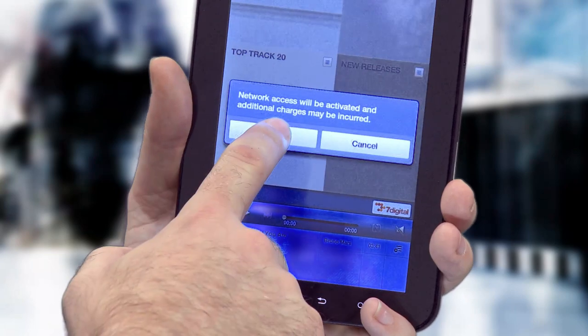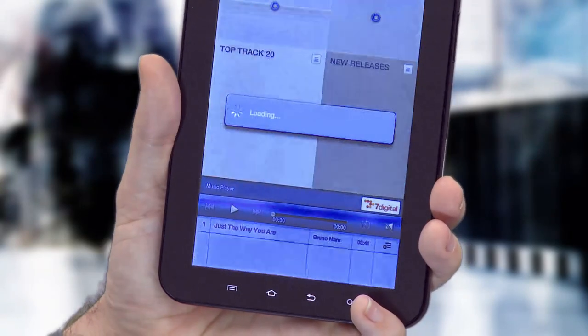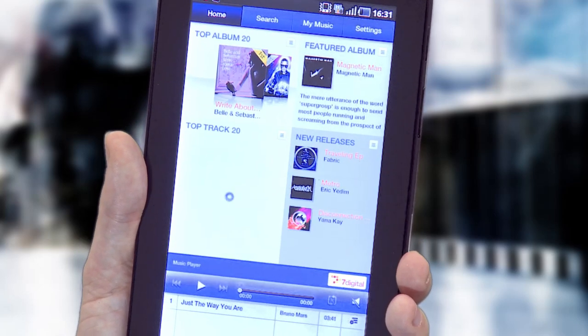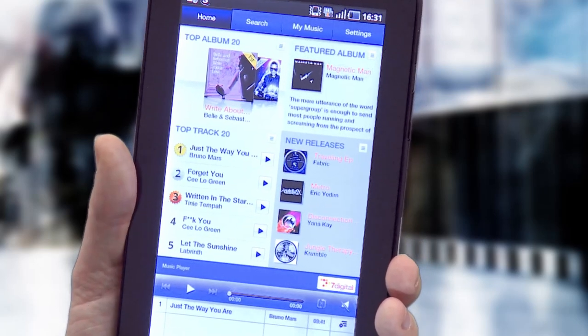Next up, we've got the Music Hub. The Music Hub is powered by Seven Digital. So what it does, it gives you access to lots of music that you can pay for and download.